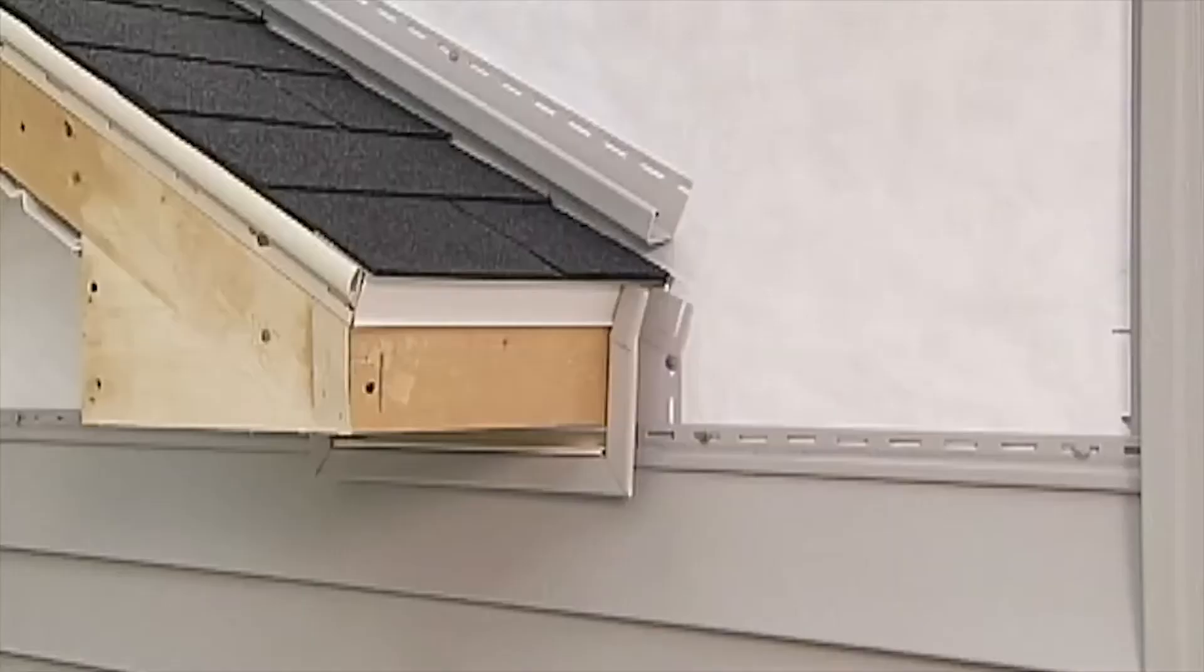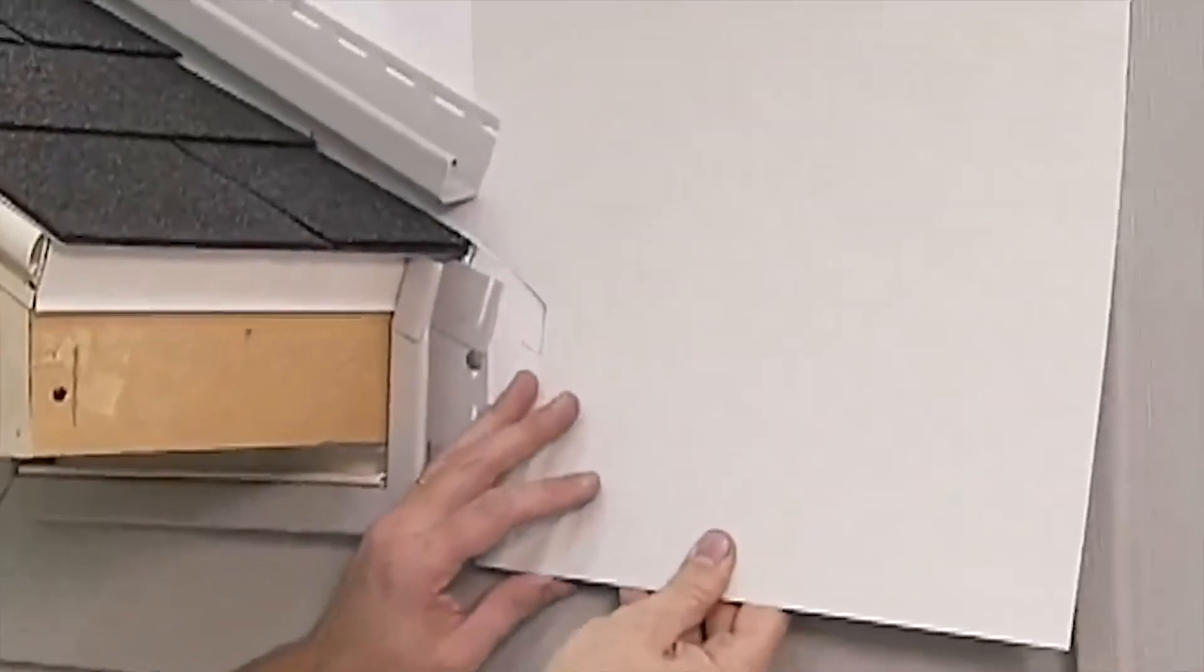When a sidewall intersects with a roofline, run the siding until the last full course is under the roof section. Cut a diverter from aluminum trim sheet.